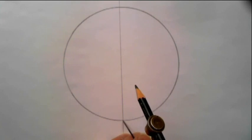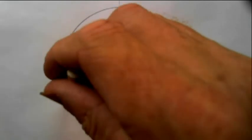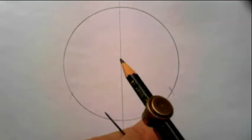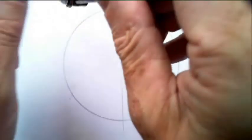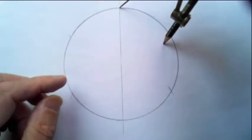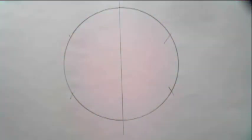You put your compass point here, tick, tick, compass point there, tick, tick, join the dots.